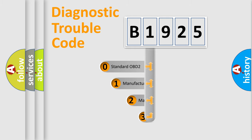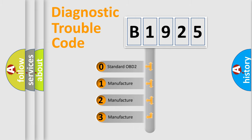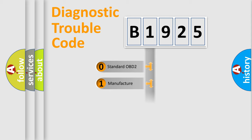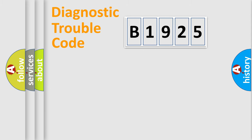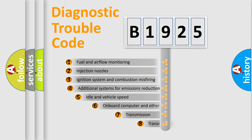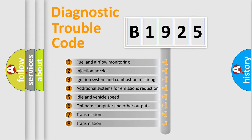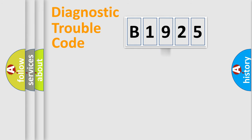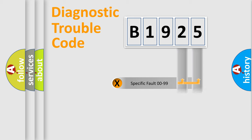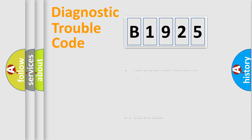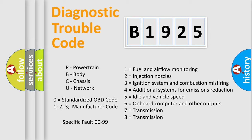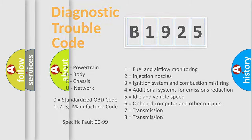This distribution is defined in the first character of the code. If the second character is expressed as zero, it is a standardized error. In the case of numbers 1, 2, or 3, it is a more specific expression of a car-specific error. The third character specifies a subset of errors. This division is valid only for the standardized DTC code, where only the last two characters define the specific fault of the group. Such a division is valid only if the second character code is expressed by the number zero.